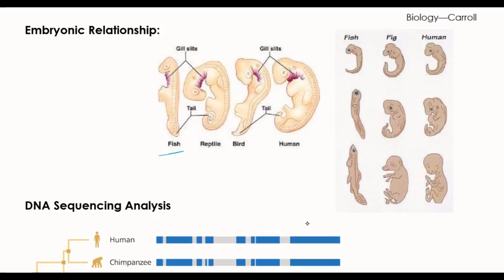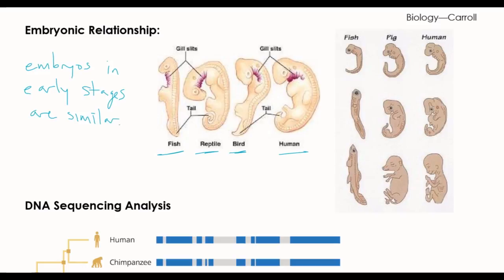So another thing that scientists look at are embryos of different creatures. We have a fish, a reptile, a bird, and a human, and we can see that we all start pretty much the same. Even people have a tail and gill slits when we are first in the womb, which is pretty weird. Through early stages of the embryo we are very similar. Looking at further development, we have a fish, a pig, and a human in early stages, and as you go down you can see that human anatomy is actually very similar to pig anatomy, which is why we are going to dissect pigs eventually.